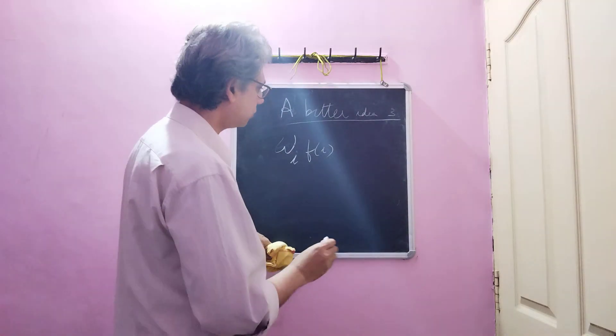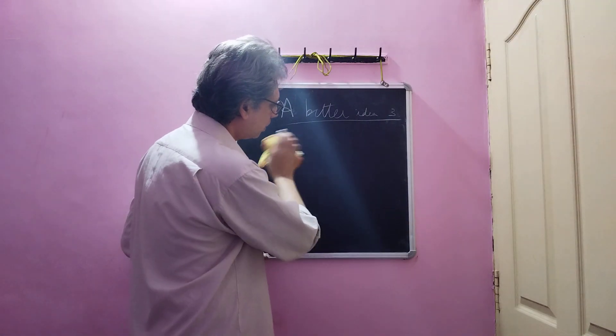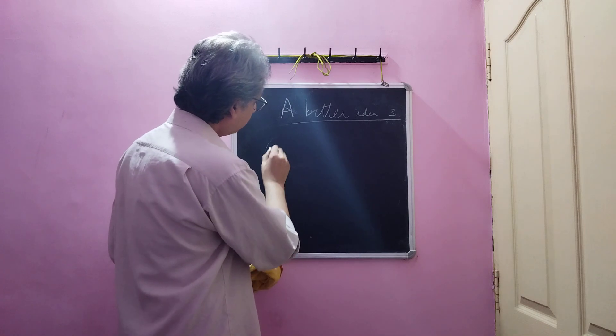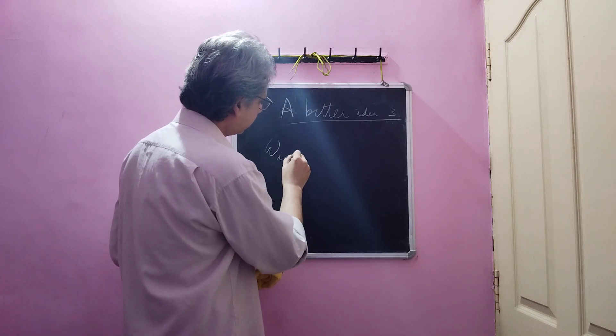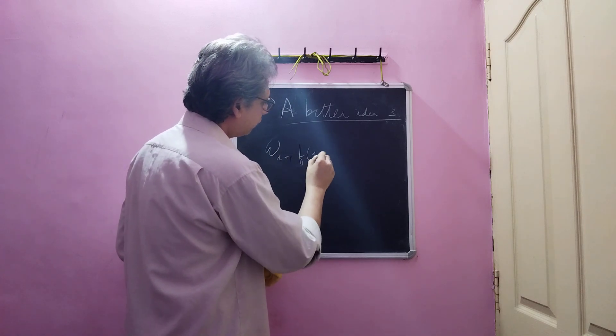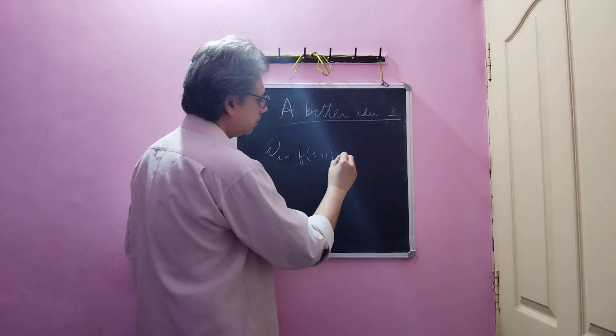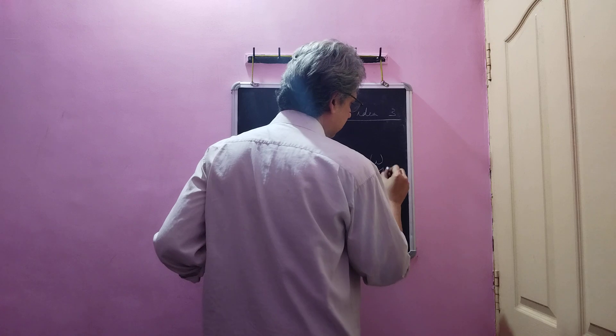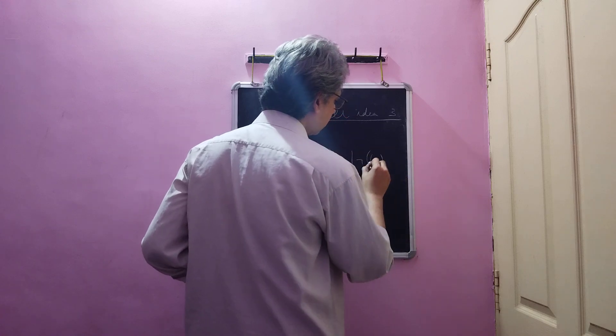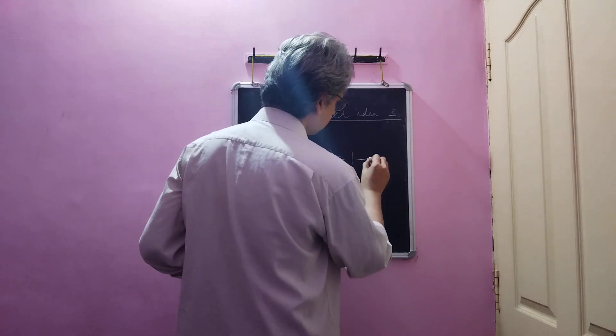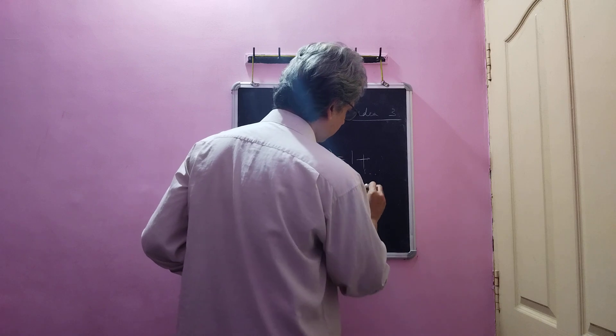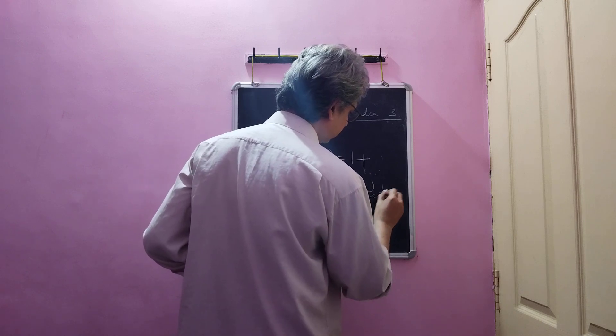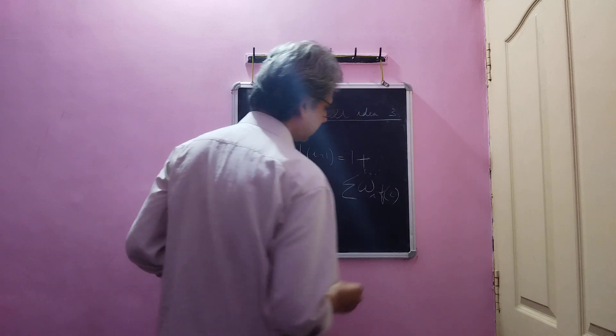We have to use, we are just using this as a formula. That means we require wi plus 1 times f of i plus 1 is equal to 1 plus summation of wi times f of i. This condition must be satisfied.